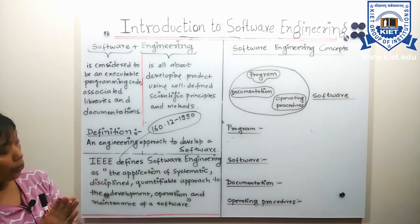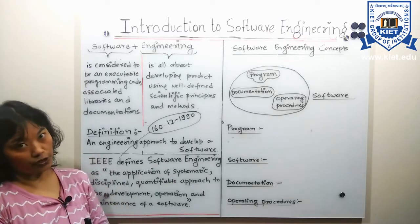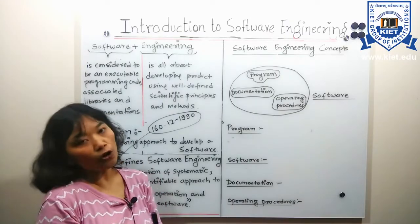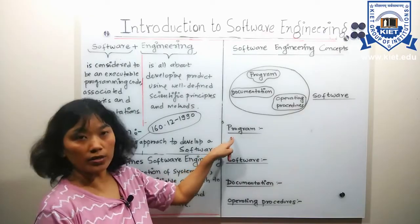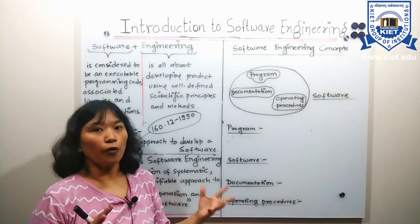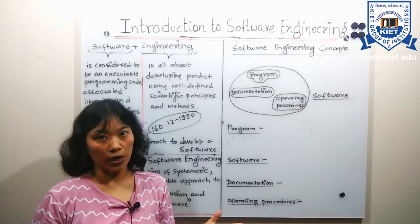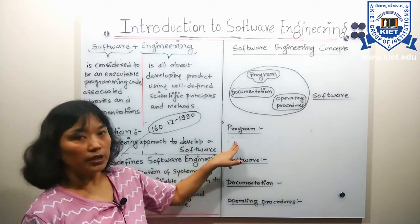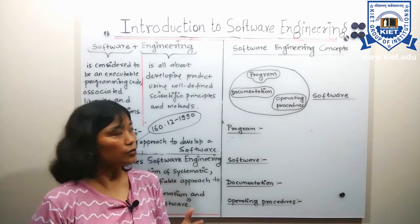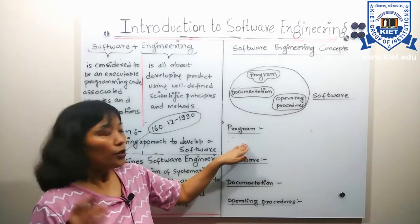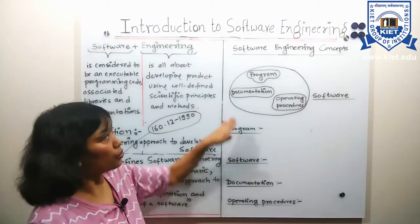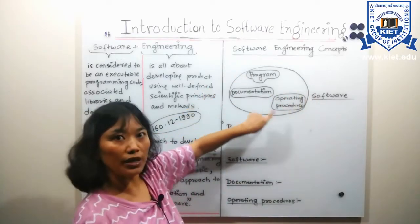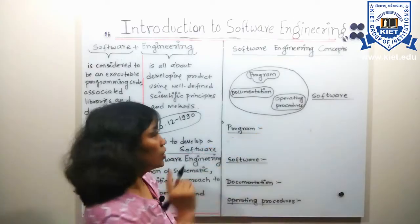Now let's move to the concept of software engineering. There are two important terms: program and software. These terms are generally used interchangeably, but both are totally different. A program is a set of instructions written in proper syntax to solve a specific problem. Software, on the other hand, is composed of the program, documentation, and operating procedures.